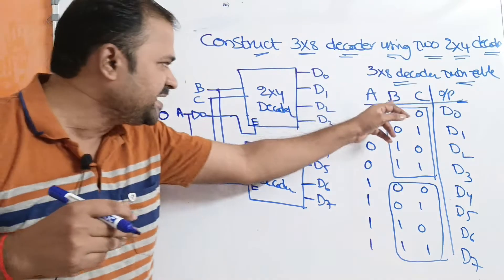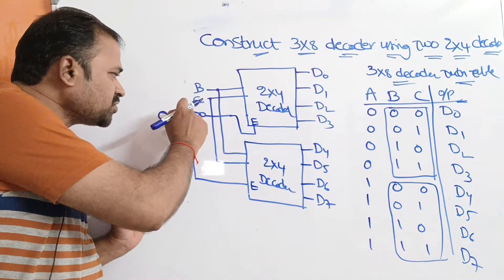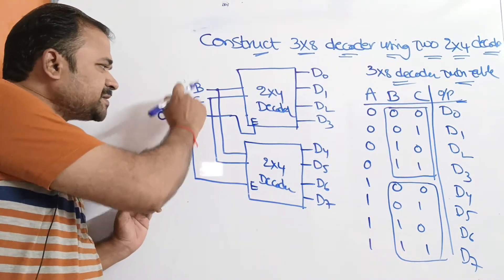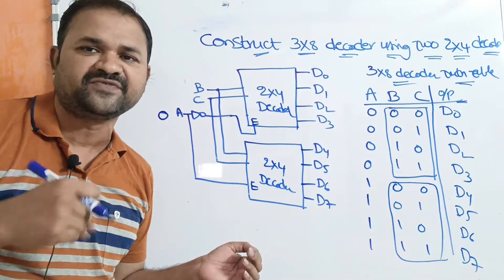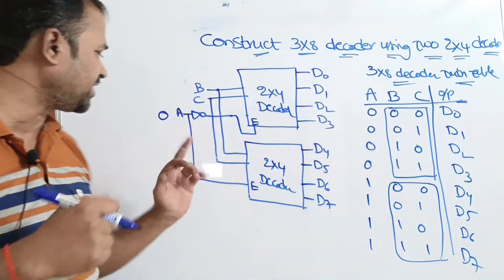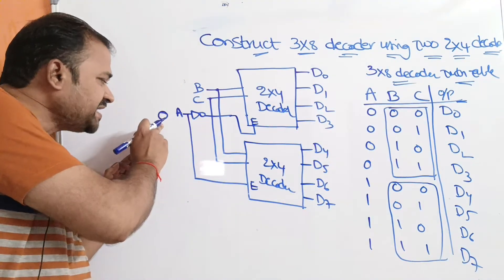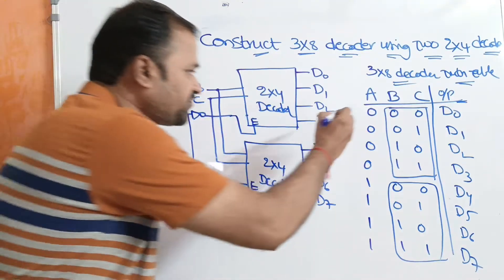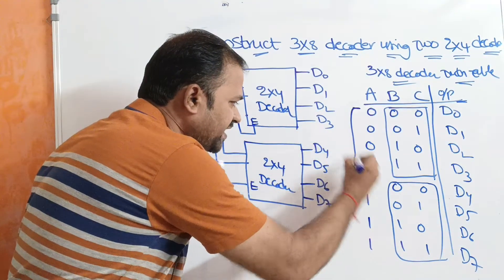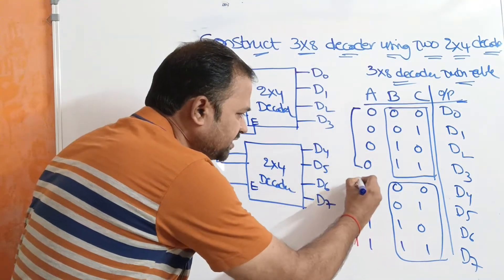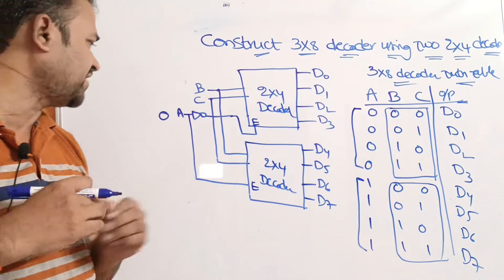For inputs B and C, the possible combinations are: 00, 01, 10, 11. For the first four combinations A value is 0, and for the next four combinations A value is 1.